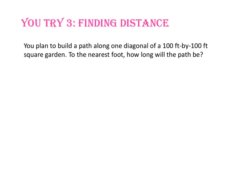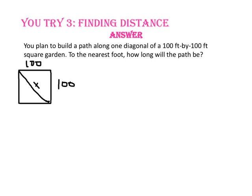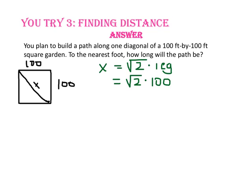Pause the video and do you-try number 3. You plan to build a path along one diagonal of a 100-foot by 100-foot square garden. To the nearest foot, how long will the path be? Since the garden is square, the diagonal path bisects the angles creating a 45-45-90 triangle. The hypotenuse equals the square root of 2 times the length of a leg. Since each leg is 100 feet, we substitute 100. Using a calculator, the square root of 2 times 100 is approximately 141.42, and rounding to the nearest foot gives approximately 141 feet.